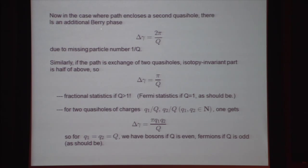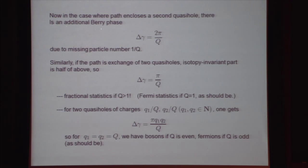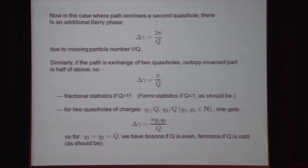Taking two around each other: exchanging them twice is the same as keeping one fixed and the other going all the way around it. If I write down the two quasi-hole function — product of z_i minus w1, product of z_i minus w2 — W1 and W2 are interchangeable. If I move w1 to reach w2 and w2 until it reaches w1, that is exactly the same function as I started with. So exchanging them gives an equivalent state — they are identical indistinguishable particles.